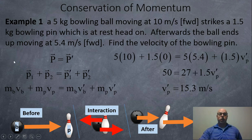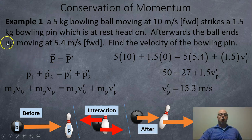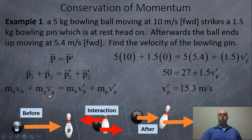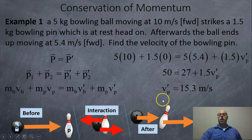Using the prime notation instead: P = P′, so P1 + P2 = P1′ + P2′. You can label objects B for bowling ball and P for pin instead of using ones and twos. So we get M_B·V_B + M_P·V_P = M_B·V_B′ + M_P·V_P′. Sticking in the same numbers, we get the same answer: V_P′ = 15.3 meters per second.